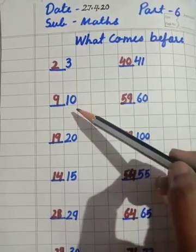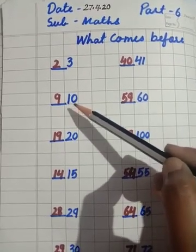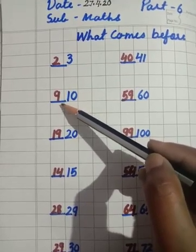Nine comes before ten. Ten se pehele kaunsa number aata hai? Nine.